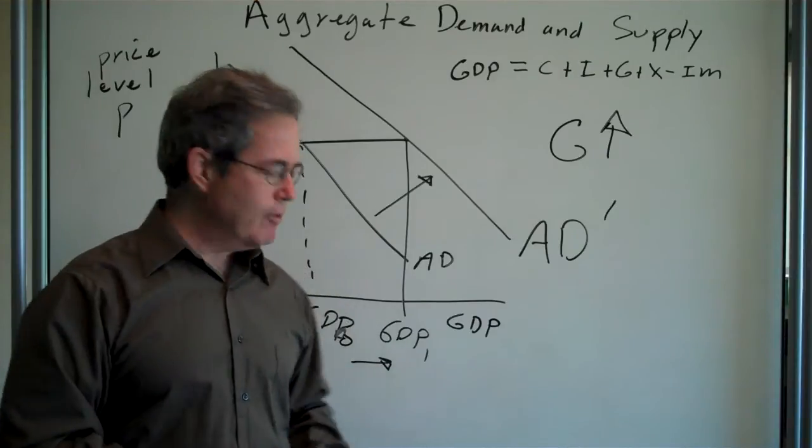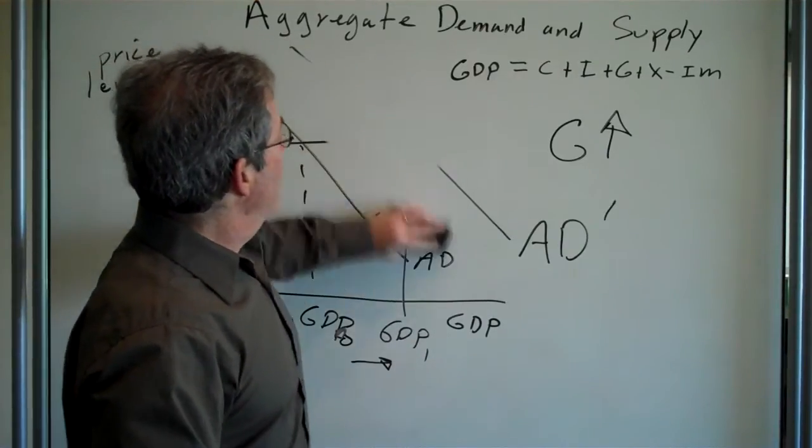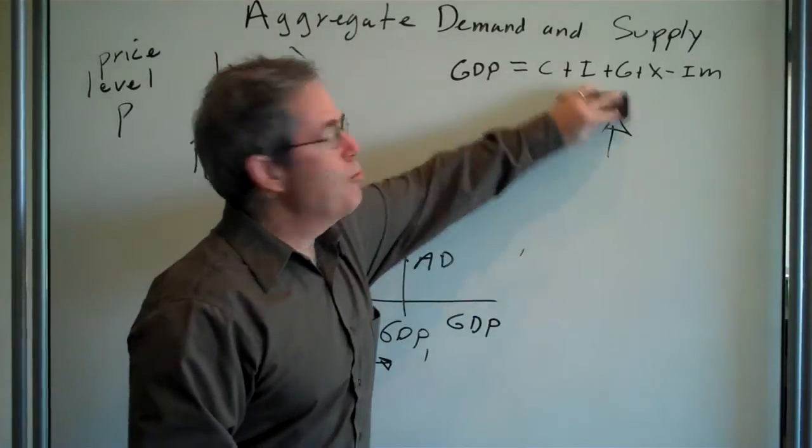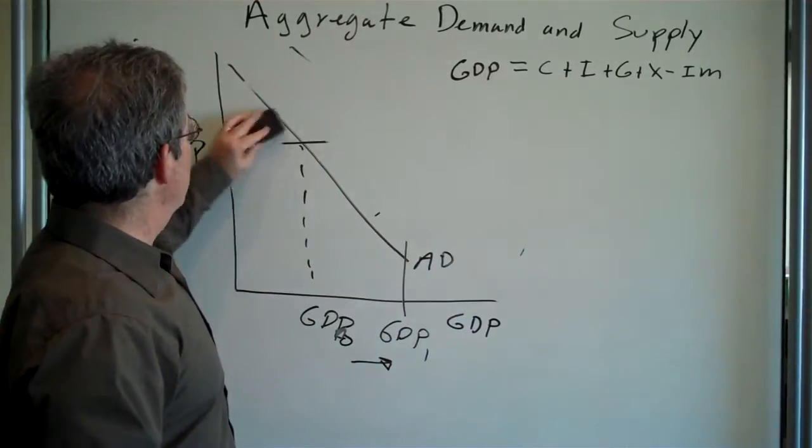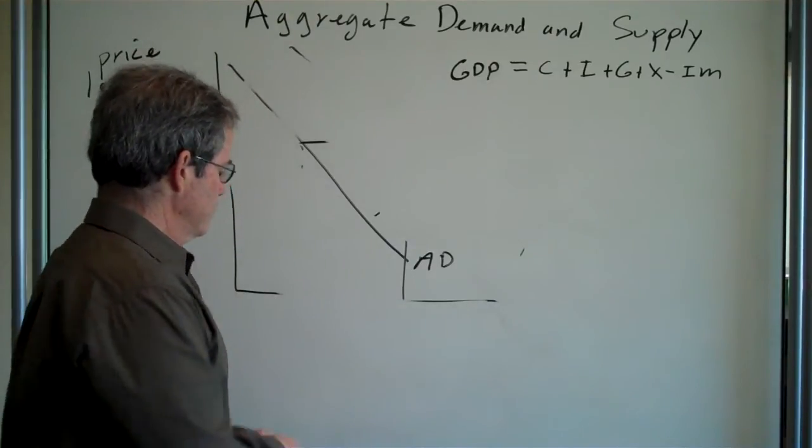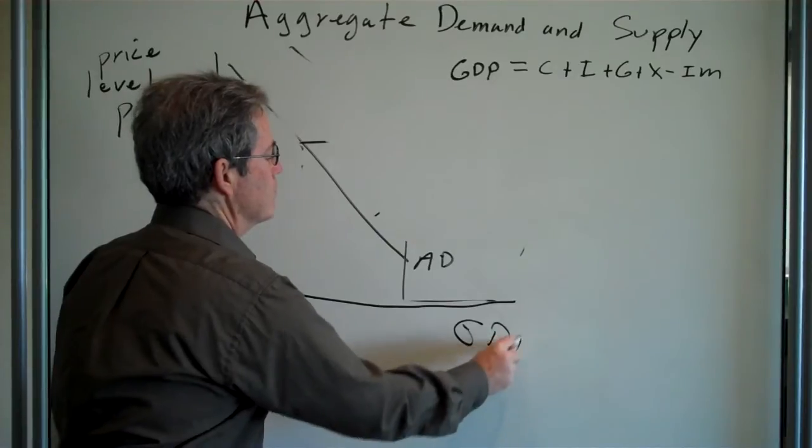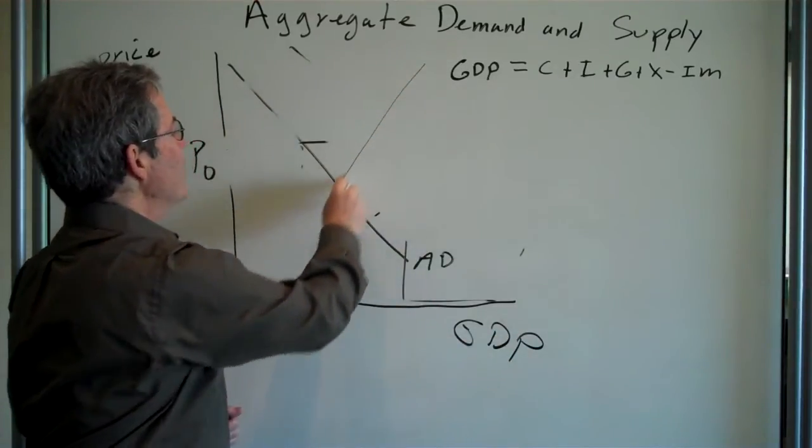Now, to complete this model, we have to put in aggregate supply. Now, if you took microeconomics, you probably already know what we're going to draw in here. We're going to draw a line that looks like that.